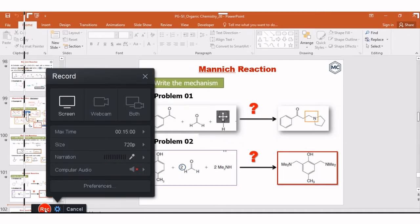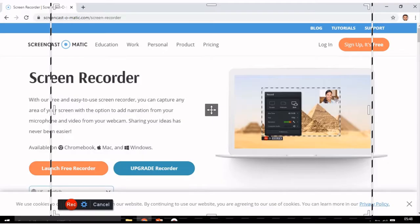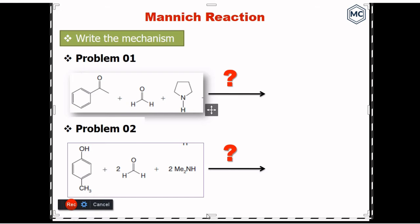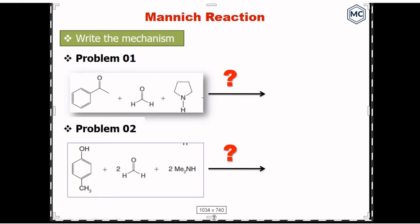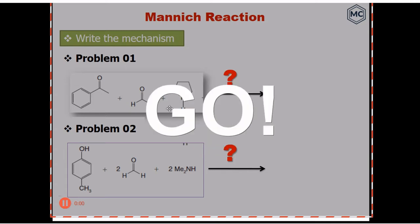Then press the record button and it will start to record. Open your PowerPoint, first take the slide view, and fit it in the window like this. After checking the window, click on the record button and the countdown will start.